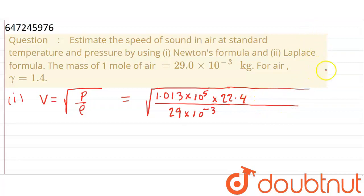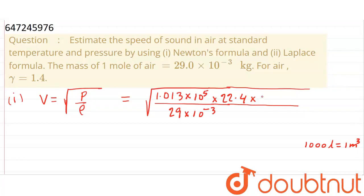1000 liters = 1 meter cube, so 1 liter = 10⁻³ meter cube. Therefore 22.4 liters = 22.4 × 10⁻³ m³. So the volume gets multiplied by 10⁻³. If we calculate density = mass/volume with these values, we get √(P/ρ) = 279.7, and since we used SI units, the unit comes out to meters per second.